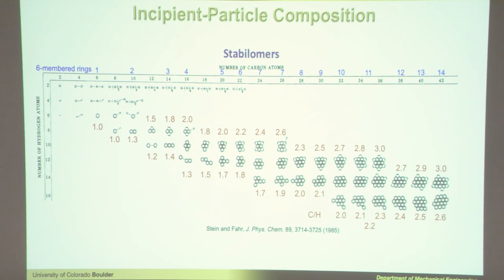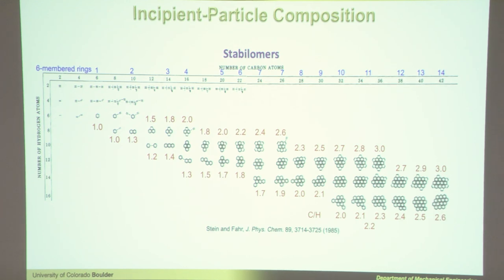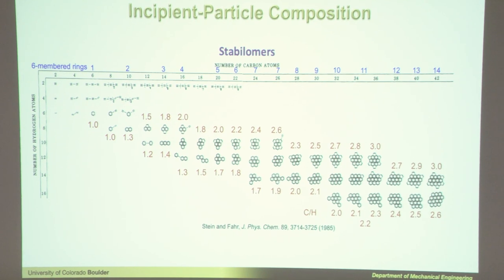For decades we've all assumed that these peaks are the stabilimers — the most thermodynamically stable species at a particular carbon and hydrogen ratio. The table lists the number of carbon atoms across the top and hydrogen atoms on the left, with the associated species. I've added along the top the number of six-membered rings and in red the carbon-to-hydrogen ratio for each species. As you get to bigger and bigger stabilimers, you get higher and higher carbon-to-hydrogen ratio.